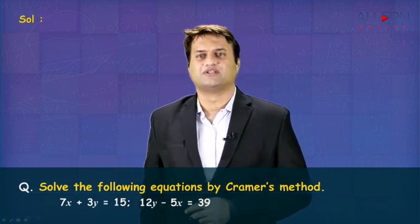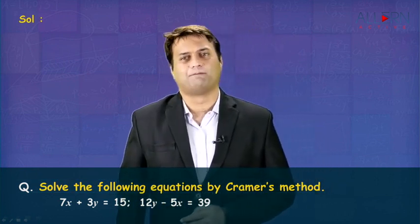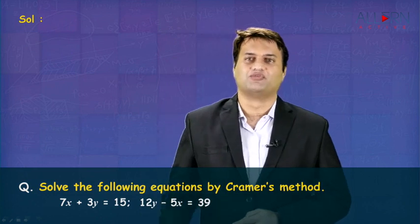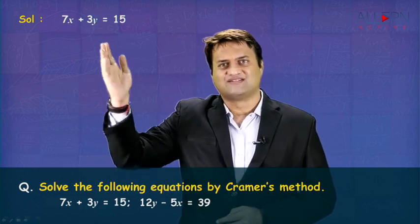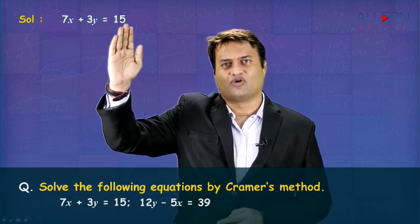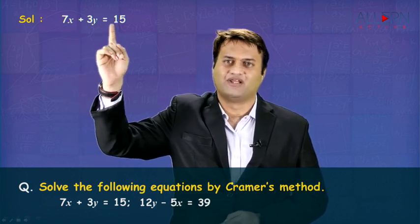Let us start with the first equation. The first equation is 7x plus 3y is equal to 15. Is the equation in the required form? Yes, it is. Variables on one side, constants on the other side and it is in the alphabetical order. First the x variable, then the y variable and then the constant. So let this be the first equation.